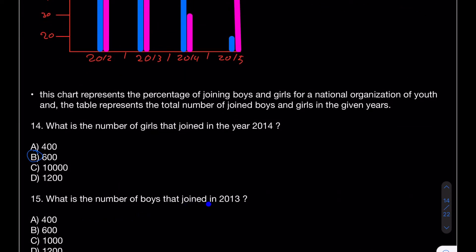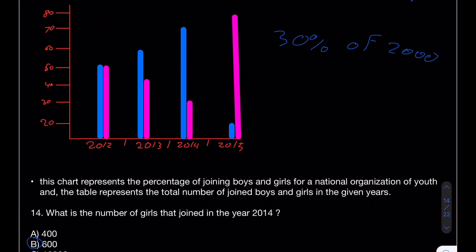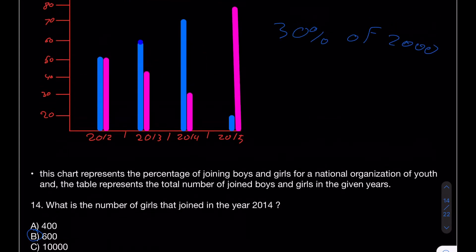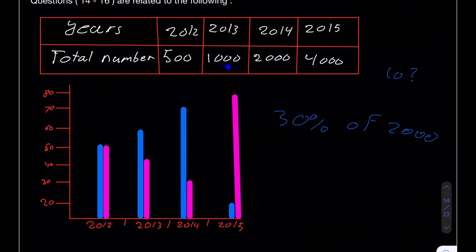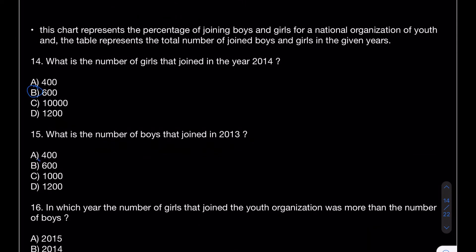For 2013, boys were 60%. In 2013 there were 1000 total, so we don't need the 10% trick — 60% of 1000 is just 600. So the answer is again B.